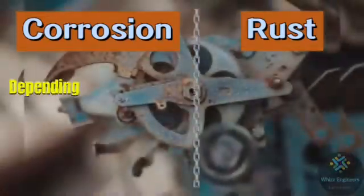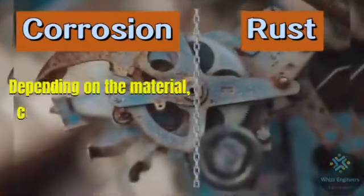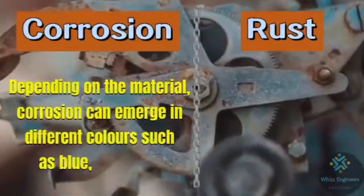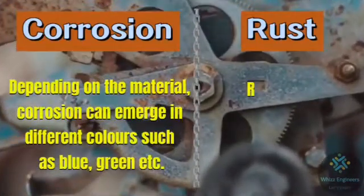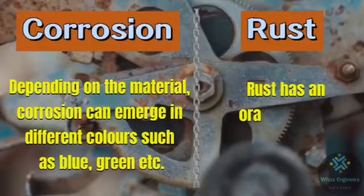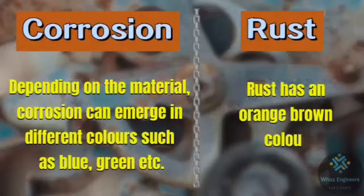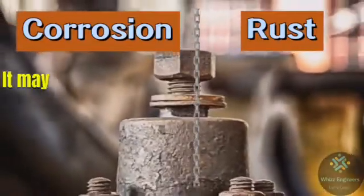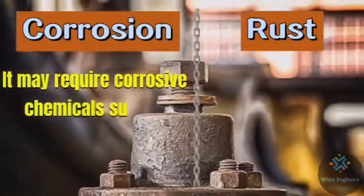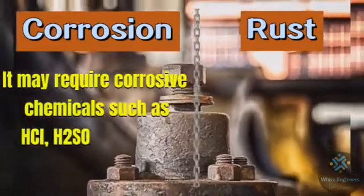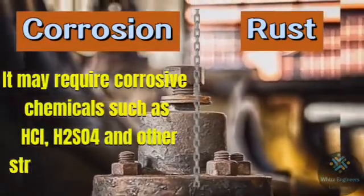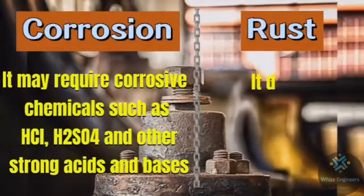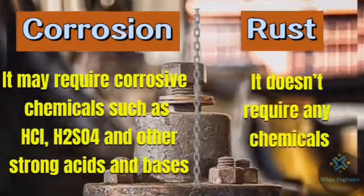Depending on the material, corrosion can emerge in different colors such as blue, green, etc., whereas rust has an orange-brown color. Corrosion may require corrosive chemicals such as HCl, H₂SO₄, and other strong acids and bases, while rusting does not require any such chemical.